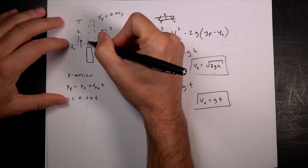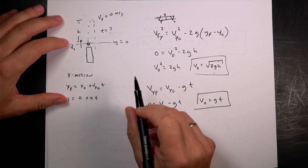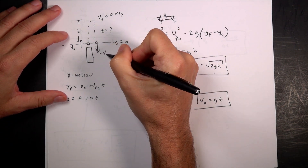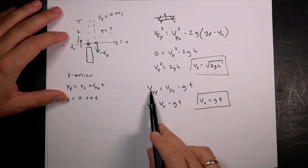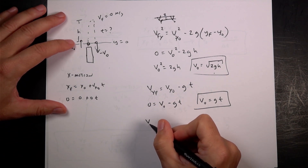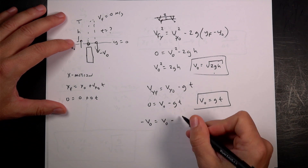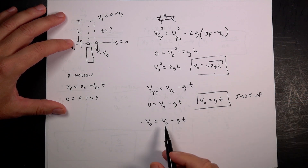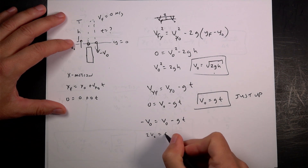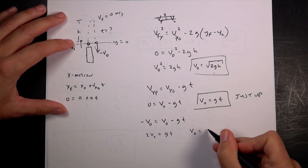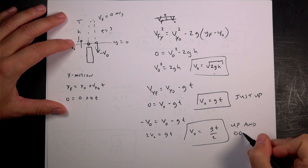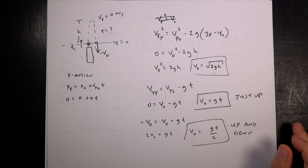What if instead I get the total time to go up and back down? Because of symmetry, the final velocity when it returns equals negative v₀. Using vy_final = vy_initial − g·t: −v₀ = v₀ − g·t. Adding v₀ to both sides: 2v₀ = g·t, so v₀ = g·t / 2, where t is the total up-and-down time. That's five different ways to measure the launch velocity.